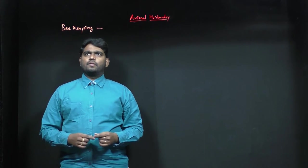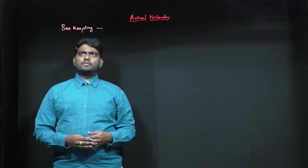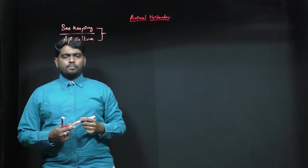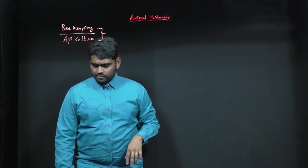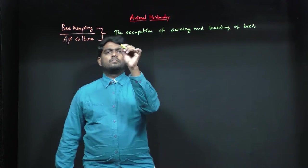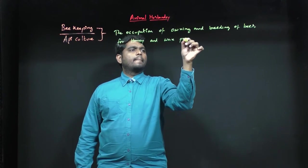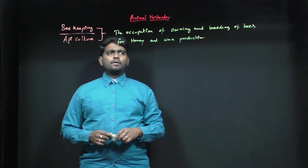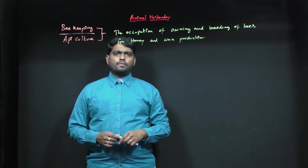We will see one by one. First of all, the definition. Beekeeping is also called apiculture. Apiculture is the occupation of owning and breeding of bees for honey and wax production.